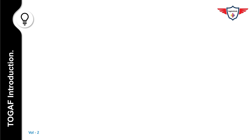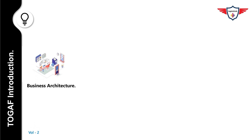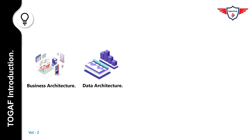The first one is business architecture. Business architecture defines the business strategy, governance, organization, and key business processes. The second one is data architecture. Data architecture describes the structure of an organization's logical and physical data assets, and data management resources.